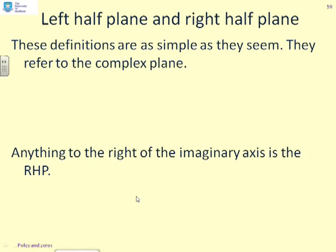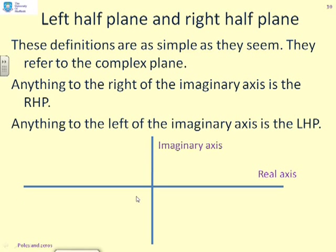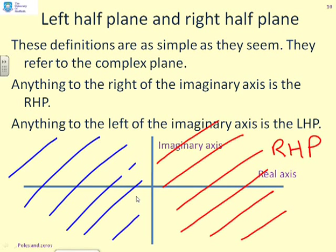Next we introduce the definitions of left half plane and right half plane. The right half plane is everything to the right of the imaginary axis, shown here with red shading. The left half plane is everything to the left of the imaginary axis, shown with blue shading. Left means to the left of the imaginary axis, right means to the right — they are half planes because they each cover half of the whole space.